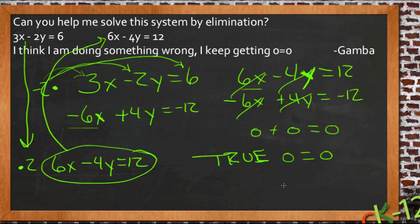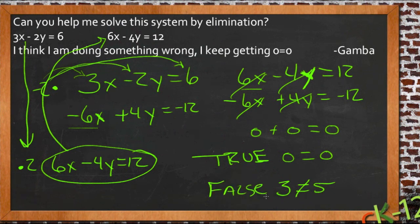Now if you do this and you come up with a false statement like 3 equals 5, that's not true. Obviously that's false. That tells you that there are no solutions. So this one is every solution. This one is no solution.